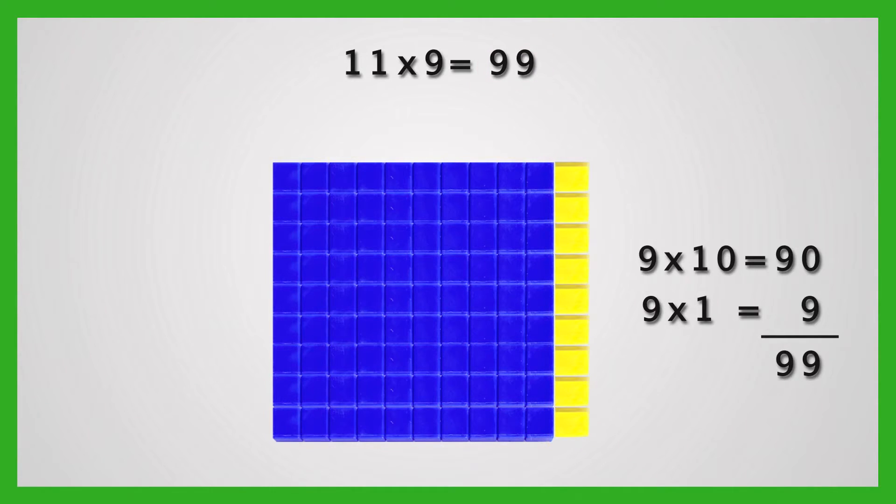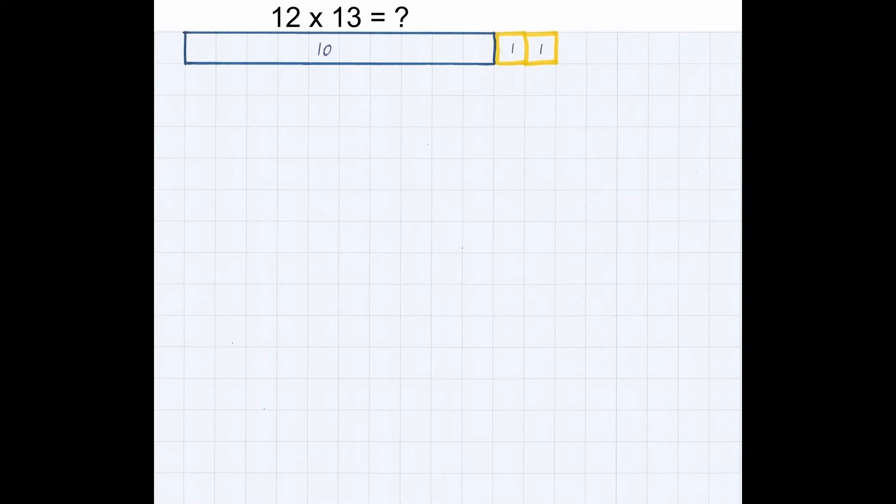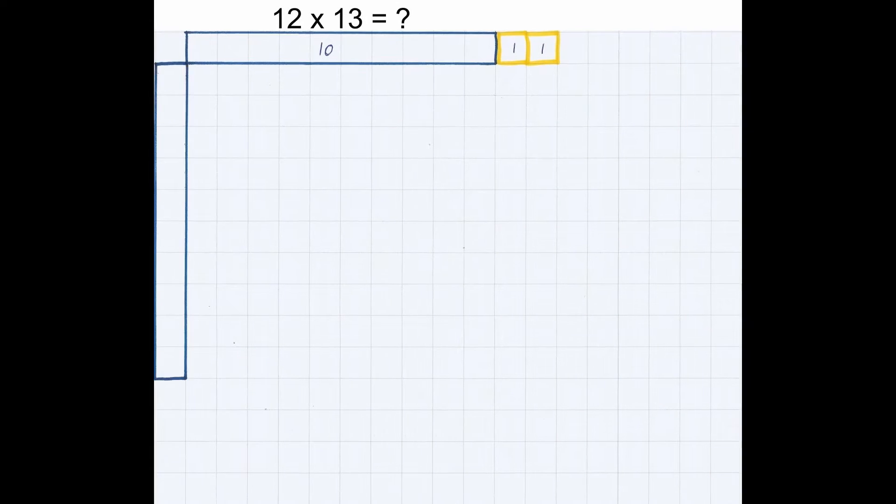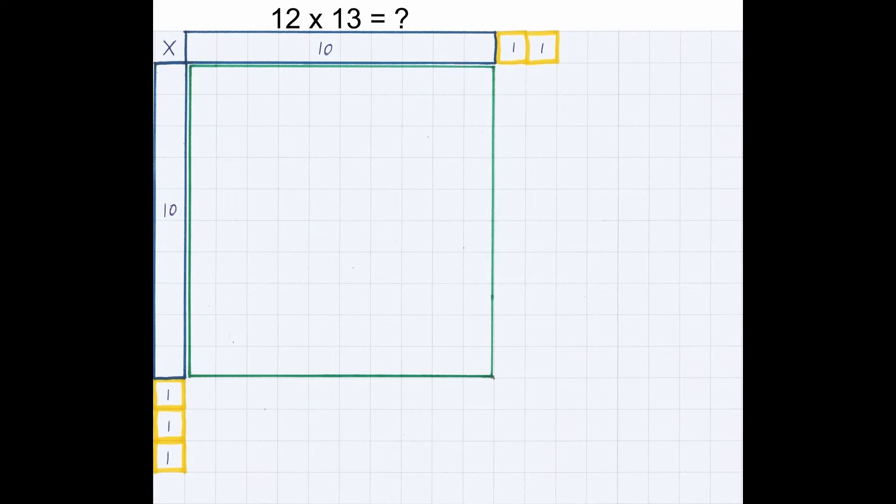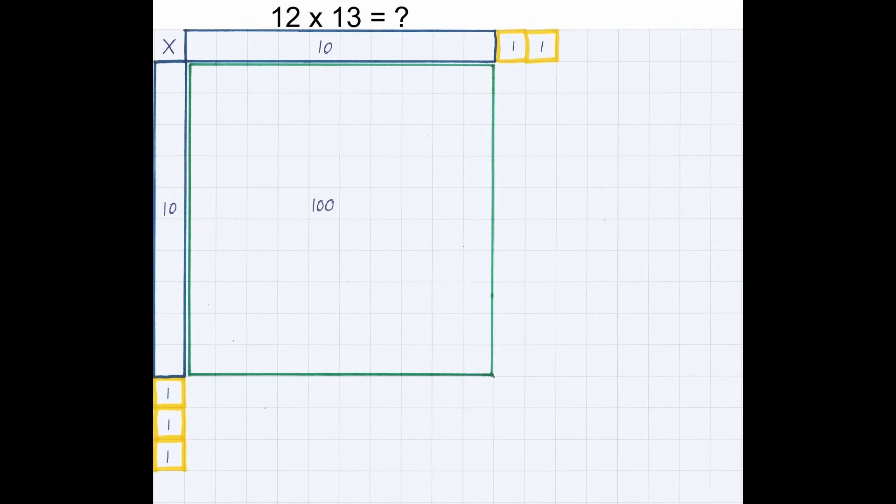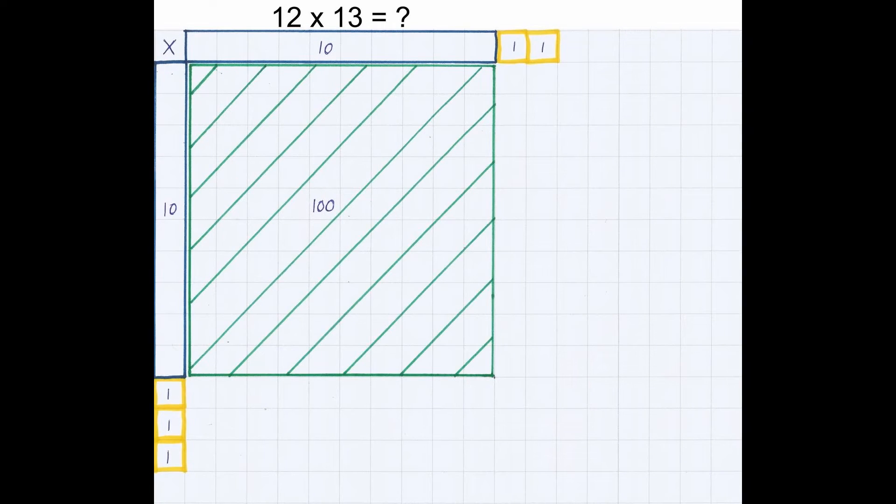Now let us multiply 12 by 13. 12 is also 10 plus 2, and 13 is 10 plus 3. These are two sides of the rectangle. Fill the rectangle with suitable base 10 blocks. 10 multiplied by 10 makes a square of 100.